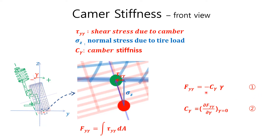Here, a minus sign means the direction of camber thrust is heading to the minus y-axis. C sub γ is called camber stiffness. Let's look into this in the next slide with its graph.